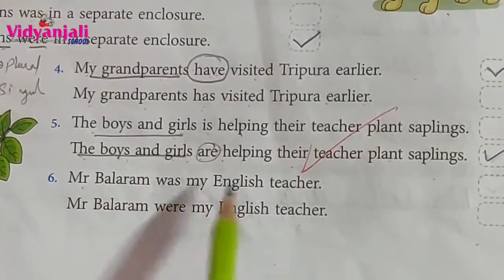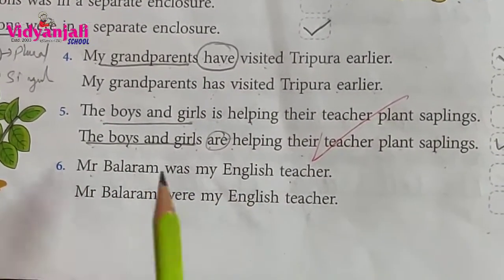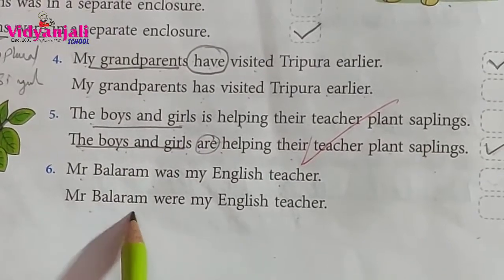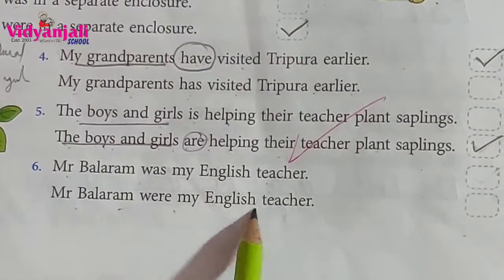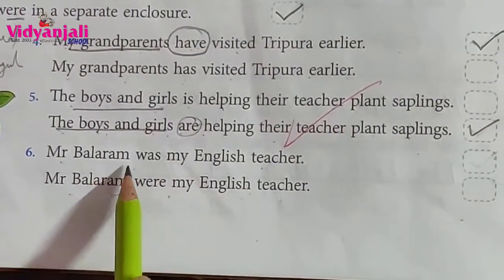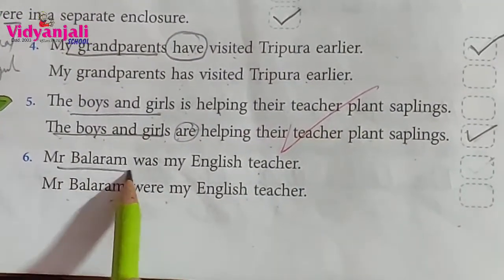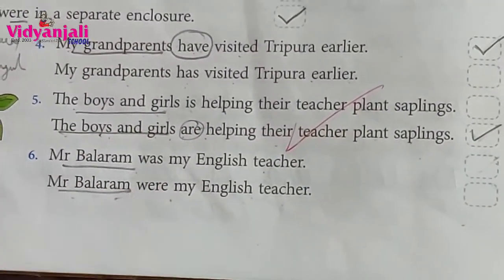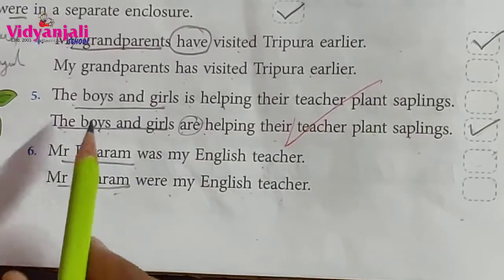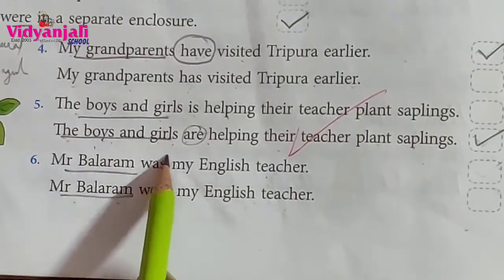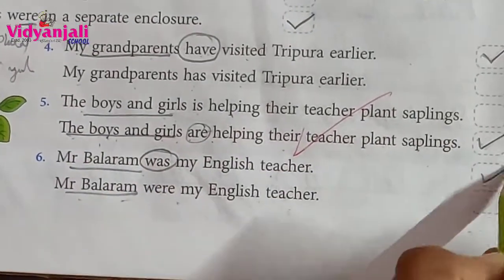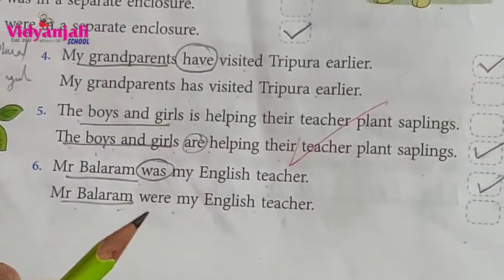'Mr. Balaram was my English teacher' or 'Mr. Balaram were my English teacher.' Now tell me, Balaram is singular or plural? Singular. So it takes a singular verb — 'was.'